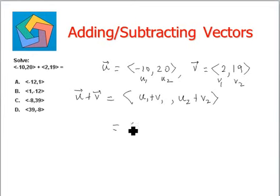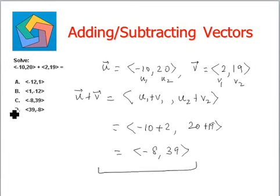This is equal to negative 10 plus 2 comma 20 plus 19. Negative 10 plus 2 is negative 8 while 20 plus 19 is 39. This is the final answer. Can be seen in option C.